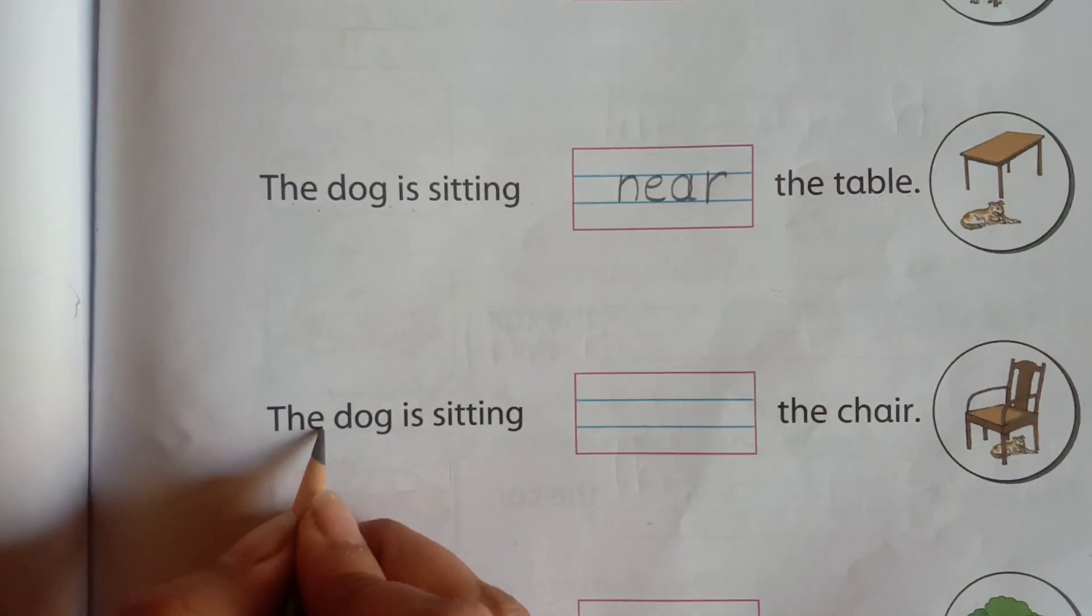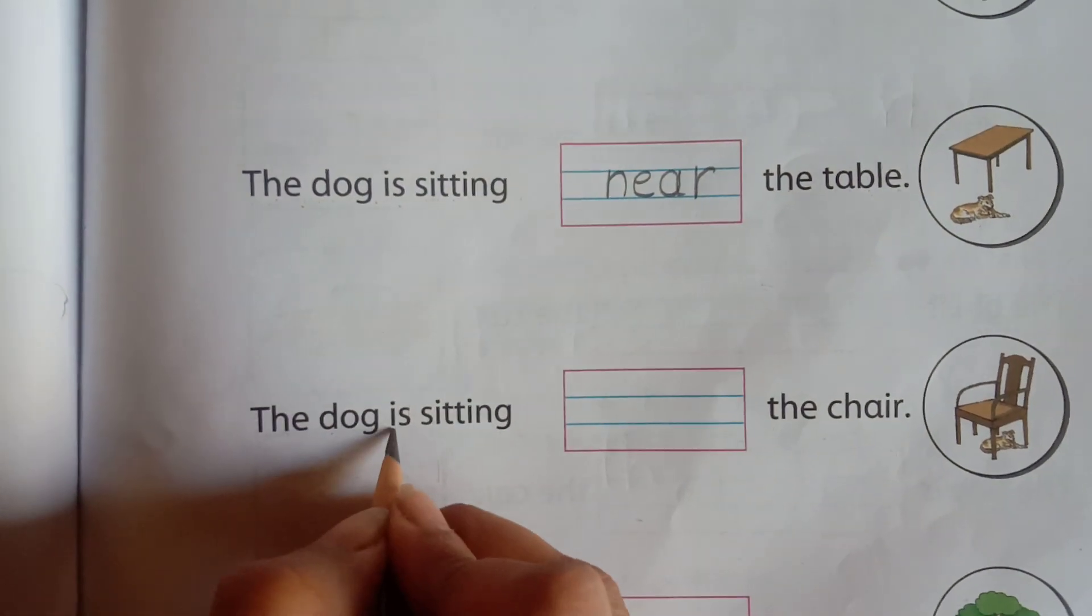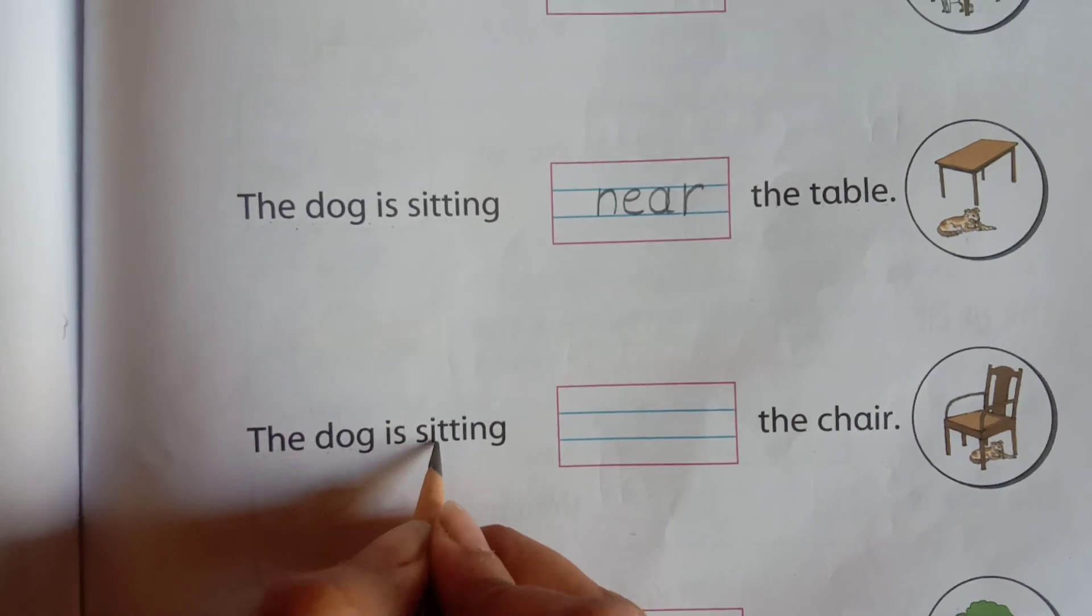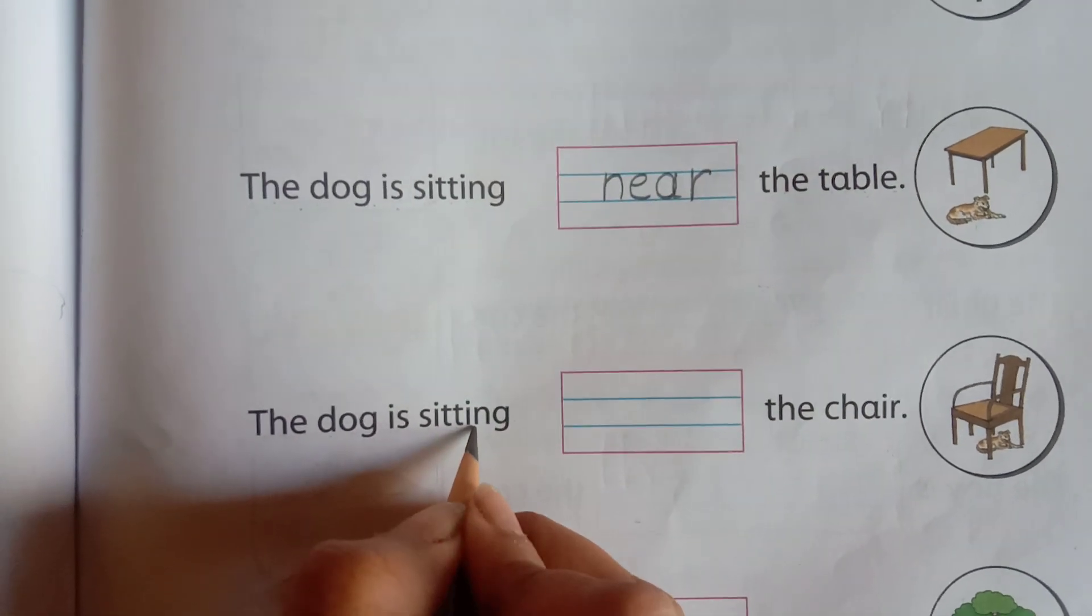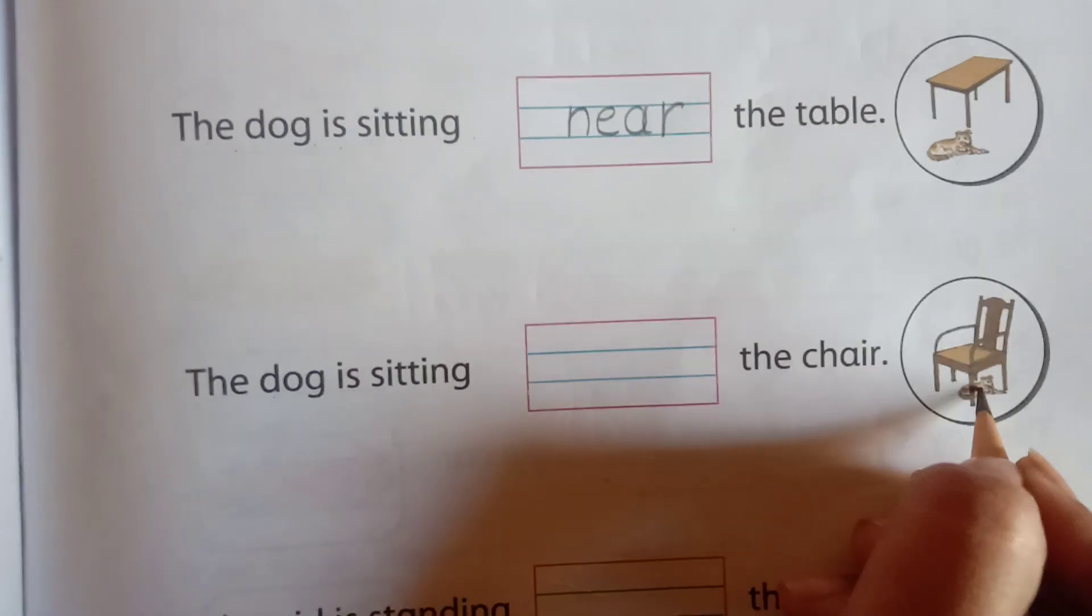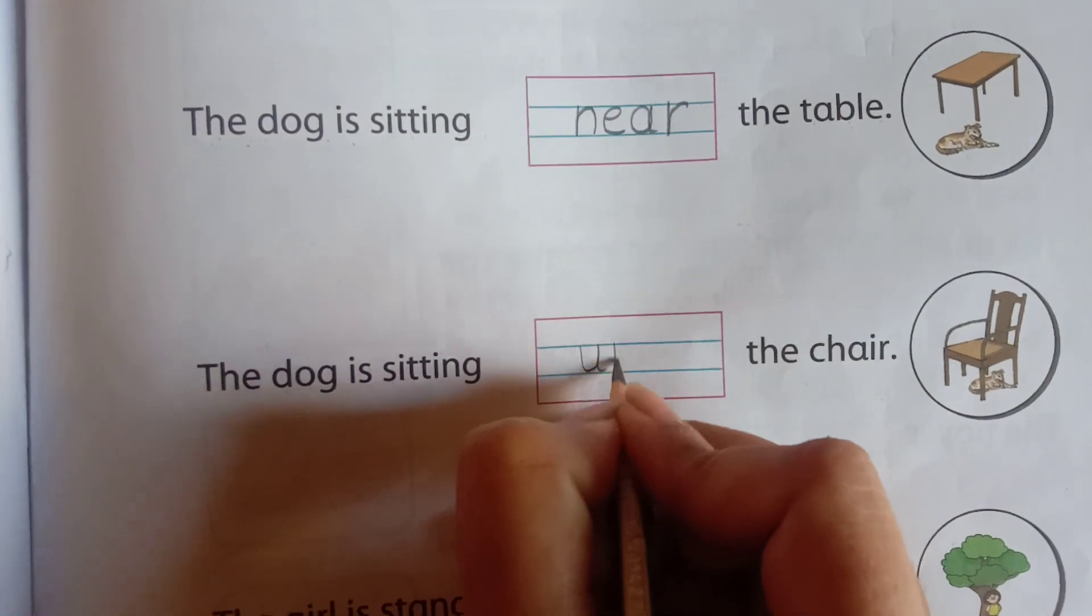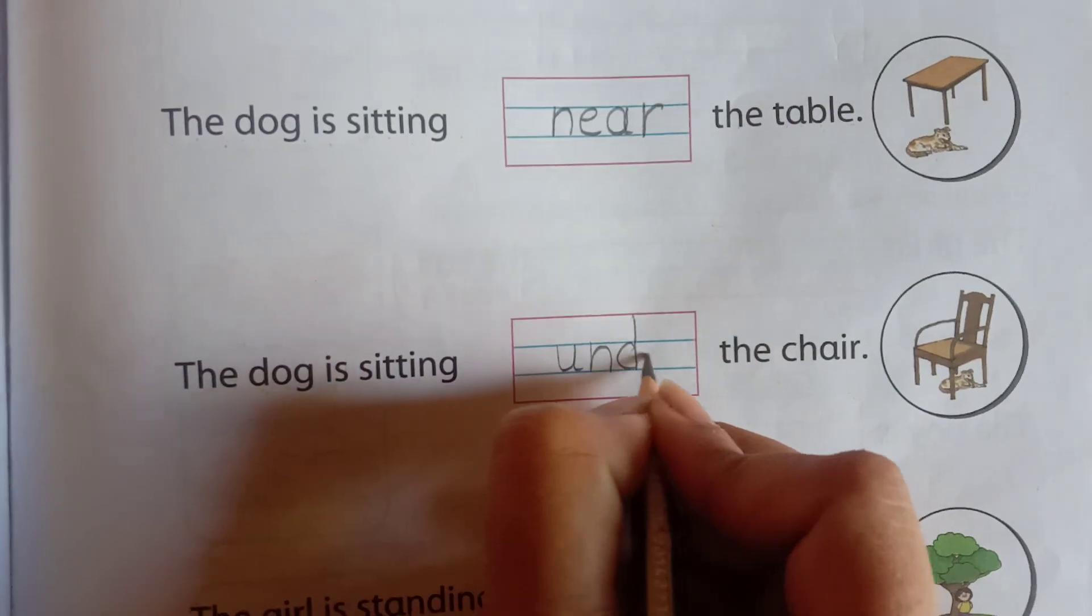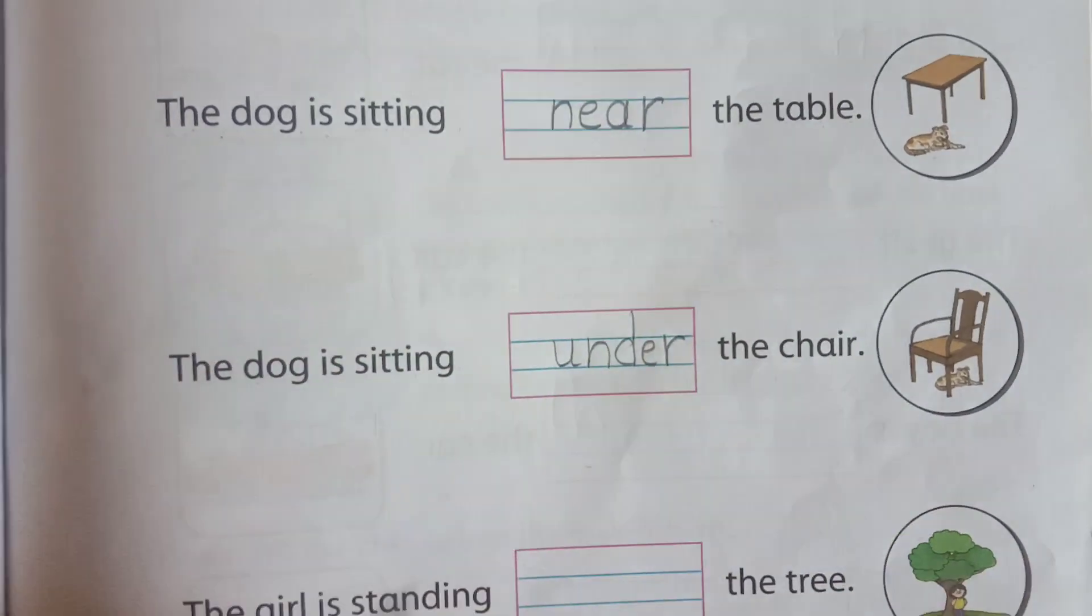The dog, dog. Is sitting, sitting. The dog is sitting. Now, you can see here, under the chair. Under the chair. So, U-N-D-E-R, under.